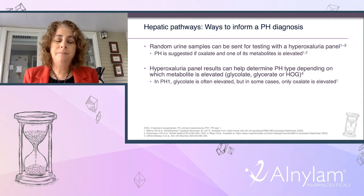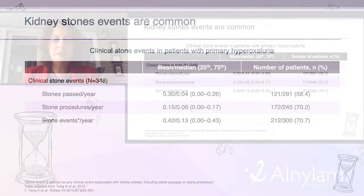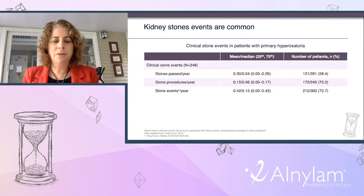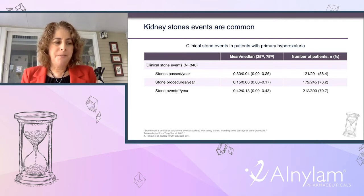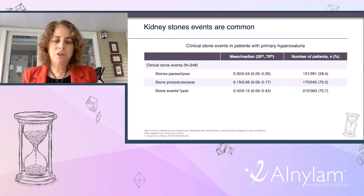Kidney stones are common in patients with primary hyperoxaluria. Adapted from a 2015 paper by Tang, 58% of patients have passed a kidney stone, with a mean of 0.3 kidney stones per year, translating to approximately one stone every 3.3 years. One or more urologic procedures were required by about 70% of patients, with a mean of 0.15 procedures per year.